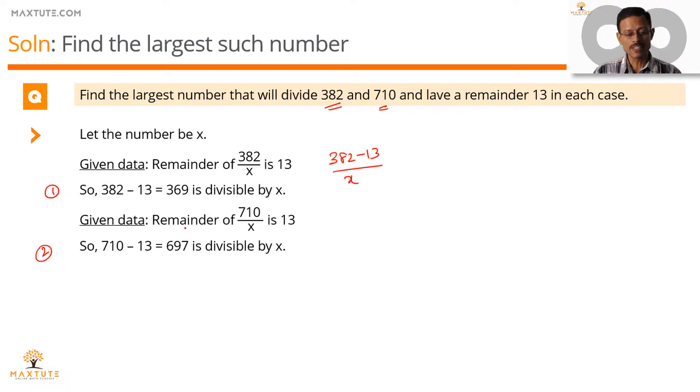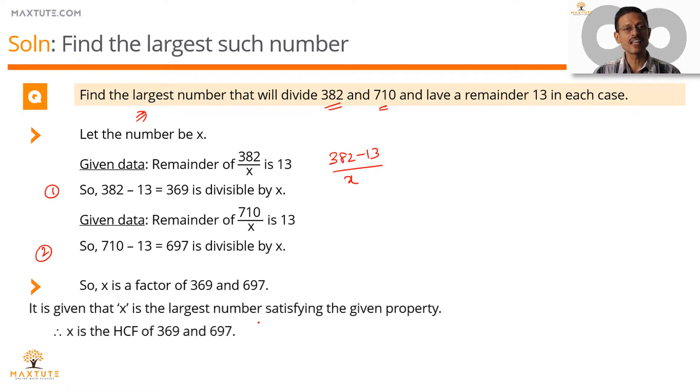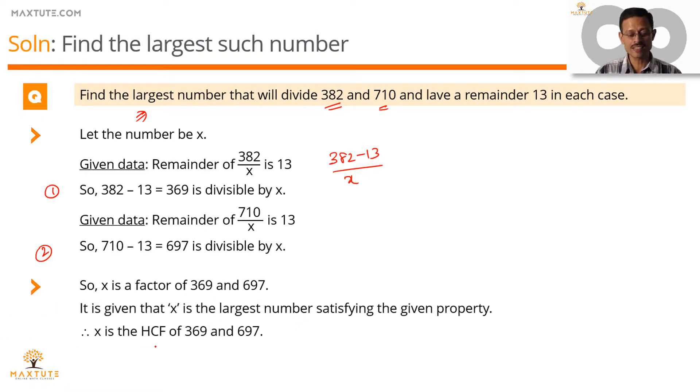Between these two inferences, what do we have? We have x divides 369, and x divides 697, which means x is a factor of 369 and 697. We need to find such an x, which is the largest number that will make this work. So, x is not just a factor common to 369 and 697, it's the largest such factor, which means x is the HCF of these two numbers. All that is left is to systematically find out the HCF of 369 and 697.